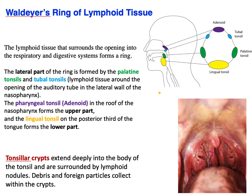Briefly about Waldeyer's ring: there is a ring of lymphoid tissue that encircles the opening into the respiratory and digestive systems. The palatine tonsils are the ones visible in the mirror. There are also tubal tonsils laterally at the tubal elevation of the pharyngotympanic (Eustachian) tube, one pharyngeal tonsil (adenoid) superiorly, and the lingual tonsil on the posterior one-third of the tongue inferiorly.